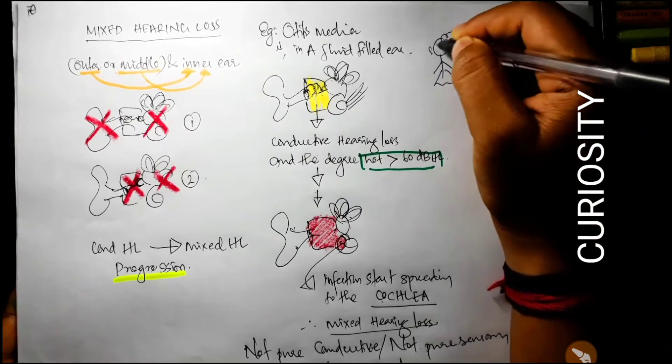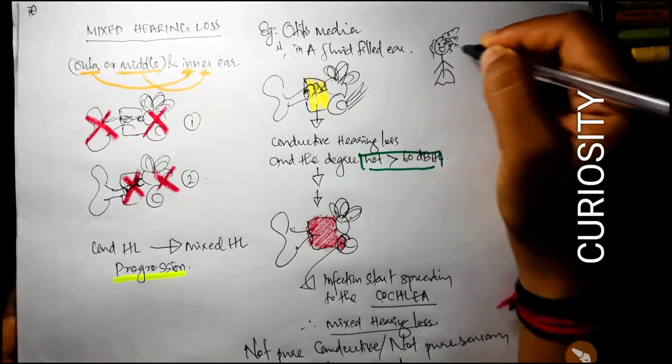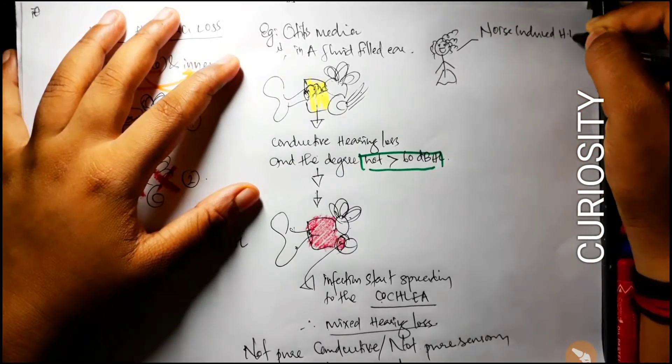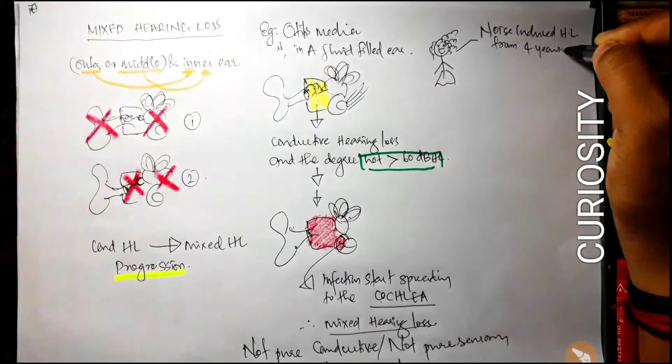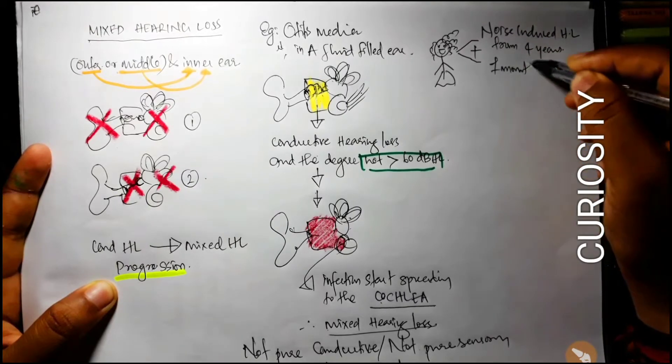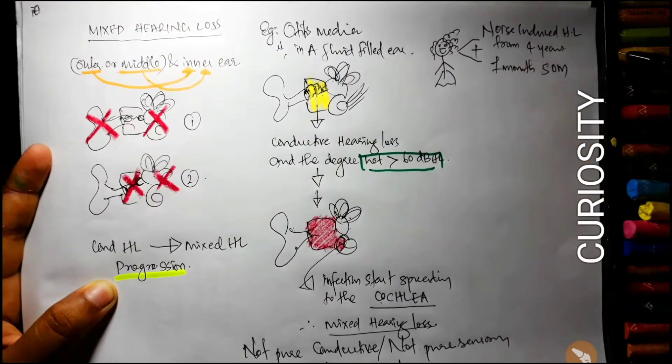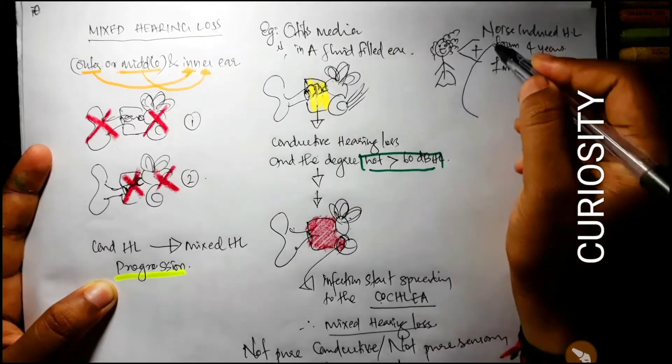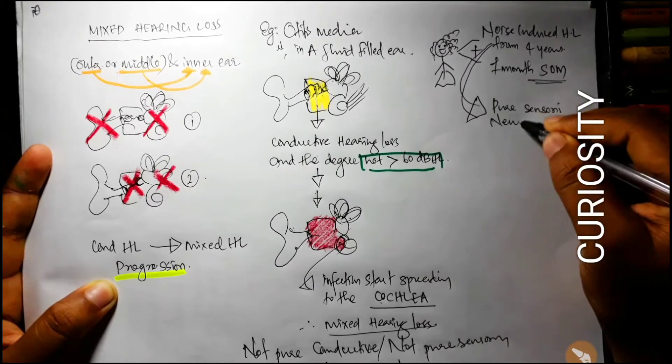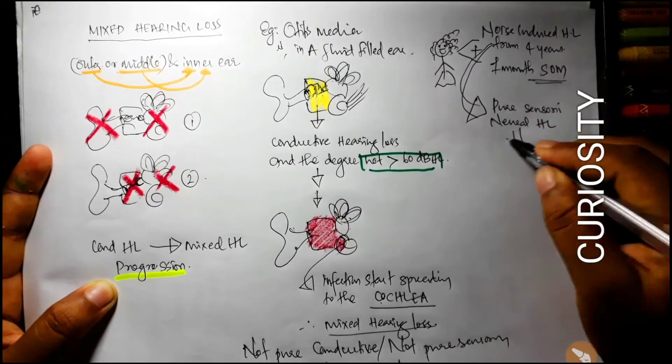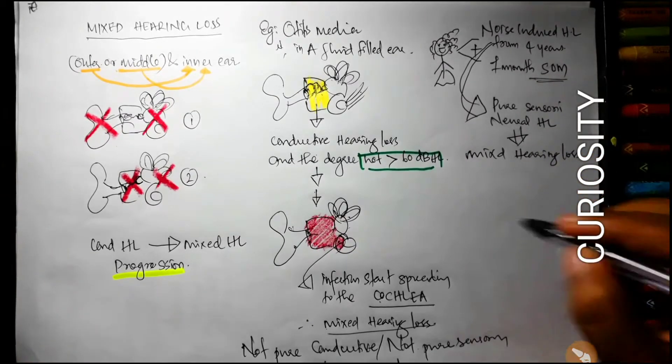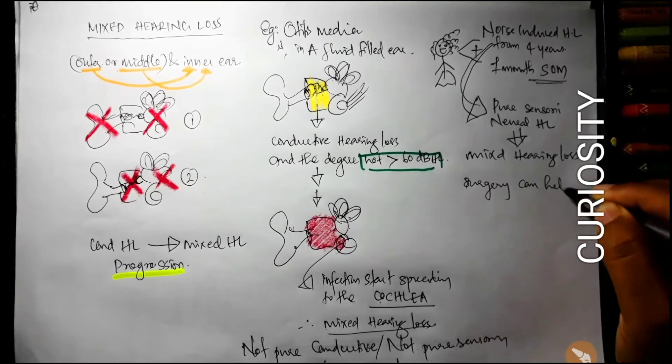The other case is like a person having noise-induced hearing loss. That is, she has hearing loss after exposure to loud noise for four years. And she is complaining that for one month, she has serous otitis media. Thus, she already has a sensorineural hearing loss and now she started with serous otitis media. It will be a mixed hearing loss. The pure sensorineural hearing loss becomes mixed hearing loss.